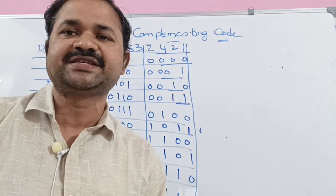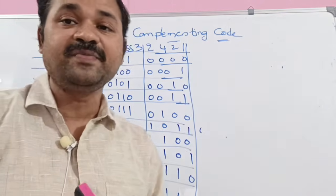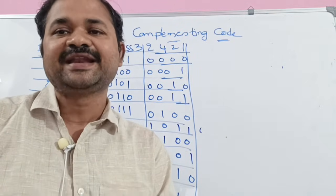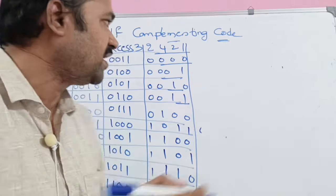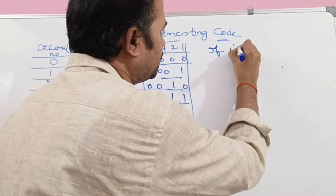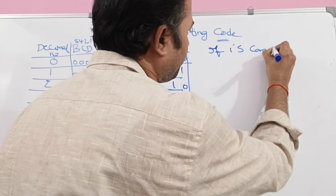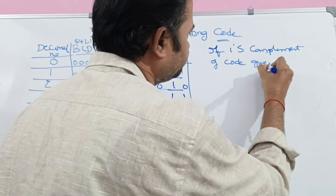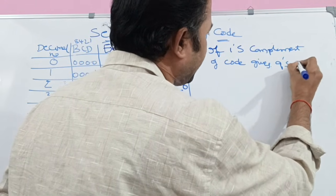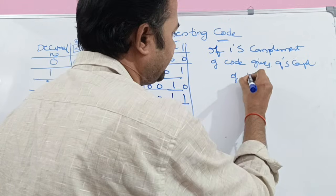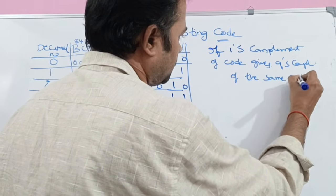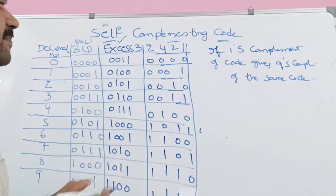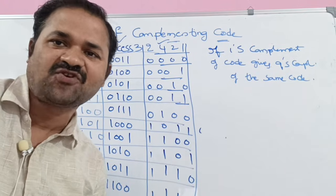Now let us see what a self-complementing code is. A self-complementing code means: if the 1s complement of a code gives the 9s complement of the same code. Both XS3 and 2421 are self-complementing codes.